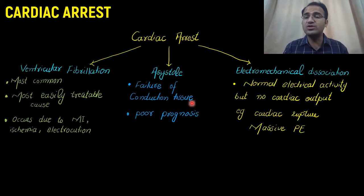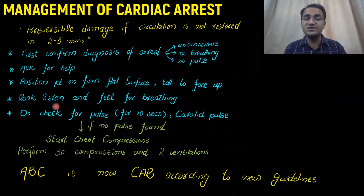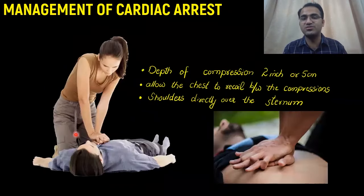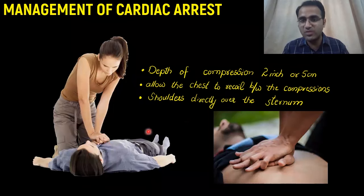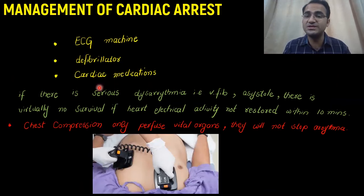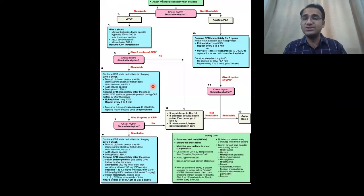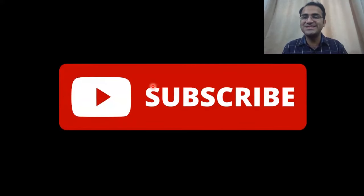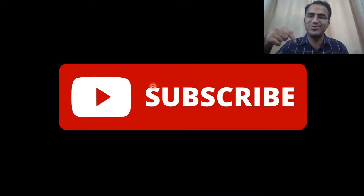In summary: we discussed the causes of cardiac arrest, with V-fib being the most common and most easily treatable. We covered the CAB approach where chest compression is the priority — depth of 5 cm, shoulders straight, elbows not bent, 30 compressions and 2 ventilations for two minutes. ECG machine and defibrillator must be available during CPR, especially in the hospital. Please click subscribe and check out other videos on emergency medicine and cardiology. Thank you very much.